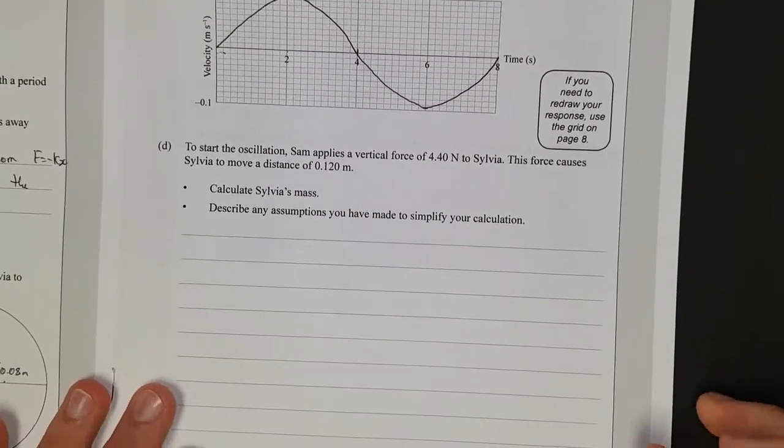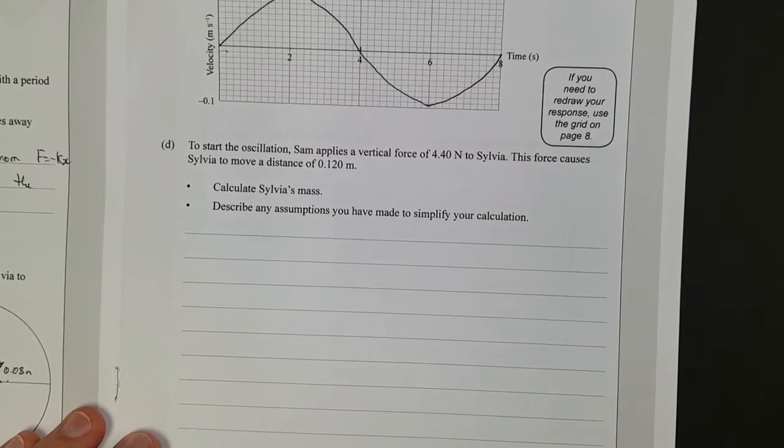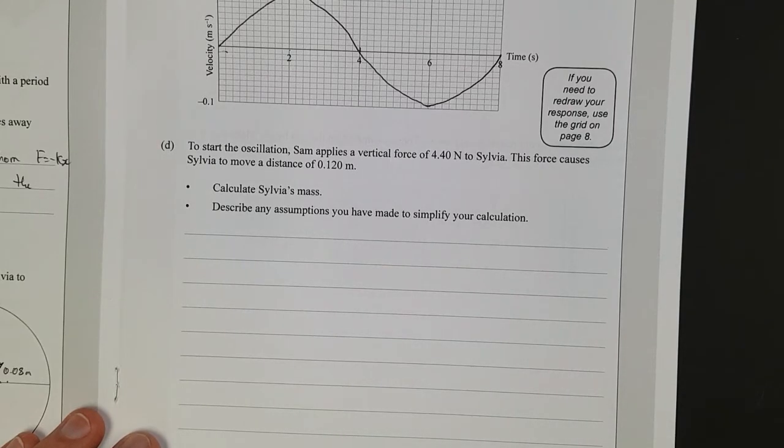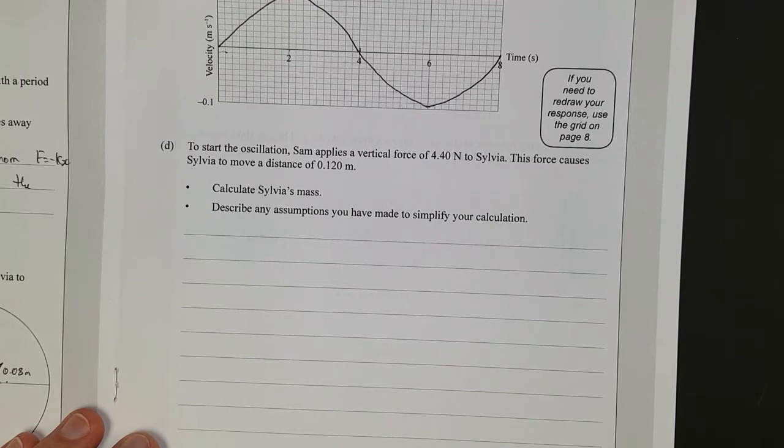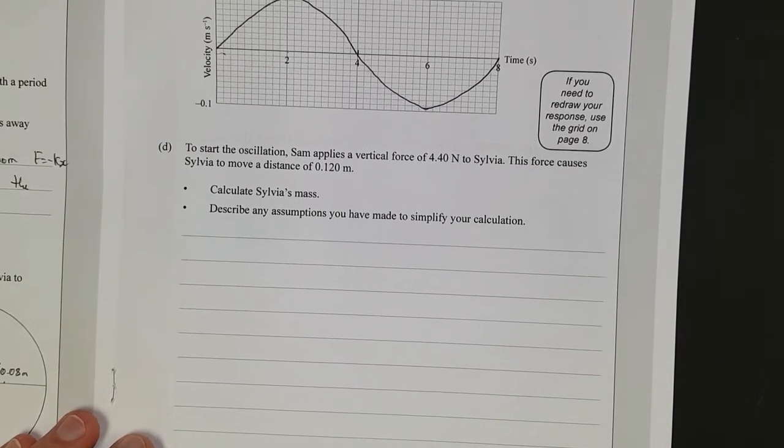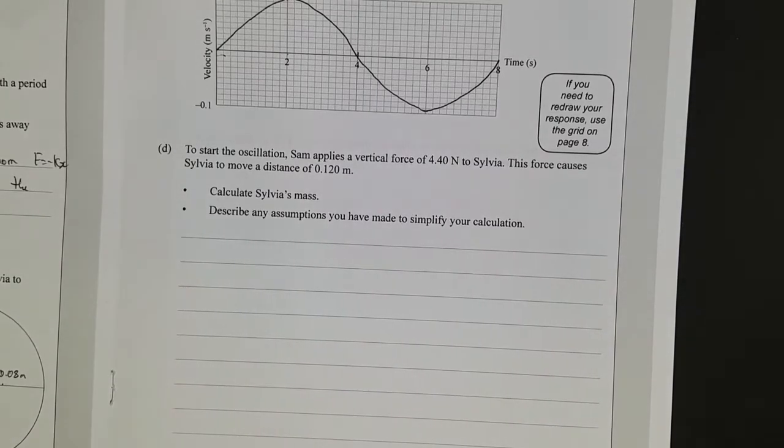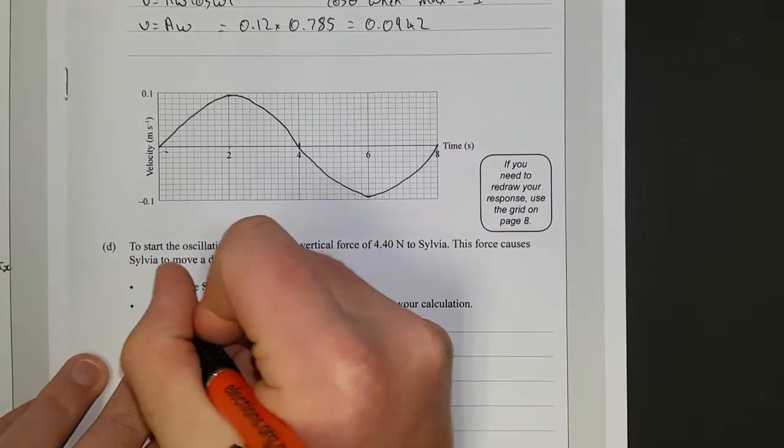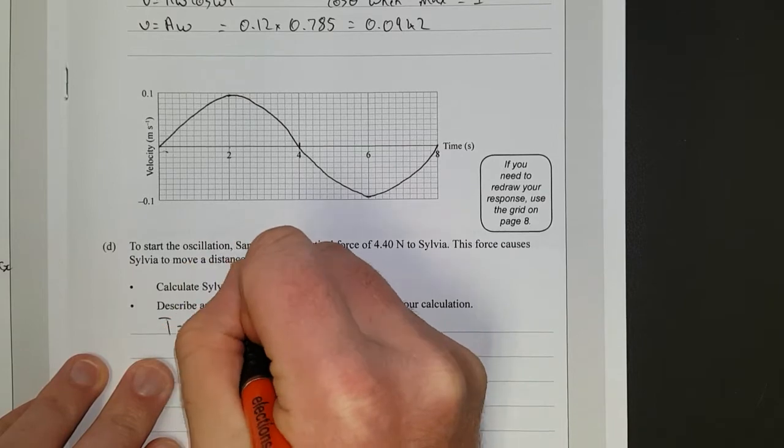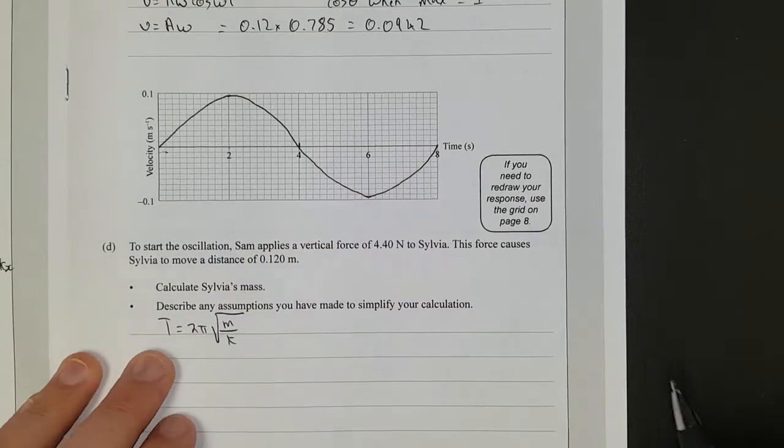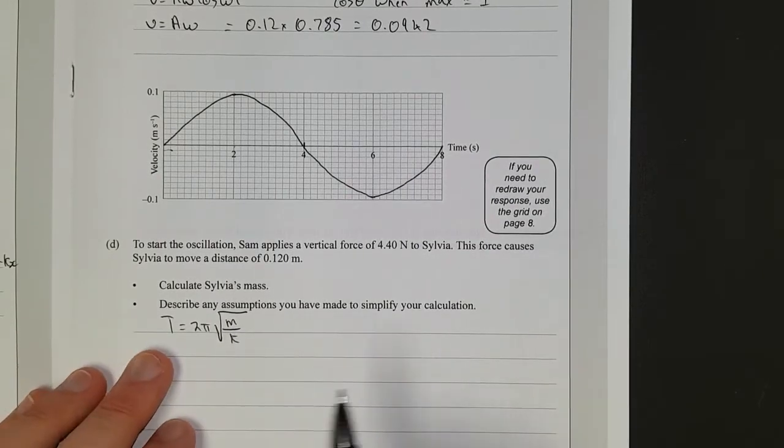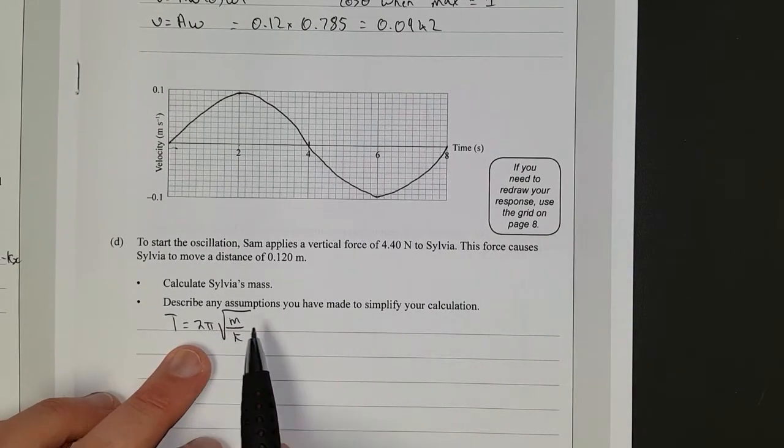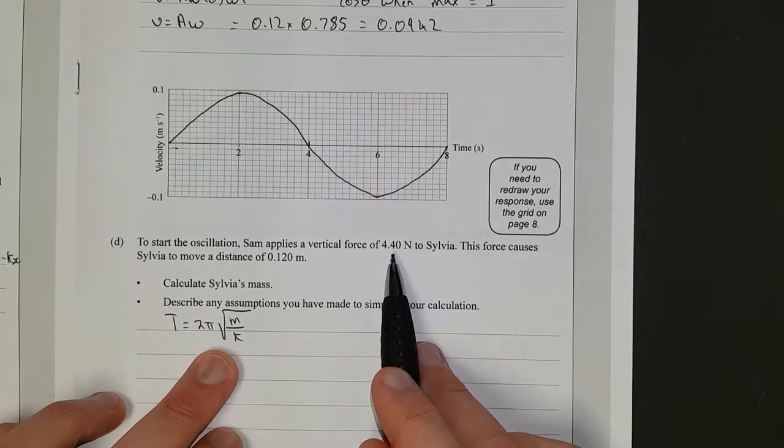Right. So to start the oscillation, next question. Sam applies a vertical force of 4.4 newtons to Sylvia. This force causes Sylvia to move a distance of 0.12 meters. Calculate Sylvia's mass and describe any assumptions you have made to simplify your calculations. So the first way I thought about how to do this was just simply it's a moving spring. So you've got, it's a simple harmonic motion as well, so the period's equal to 2 pi square root mass over, yeah, if you increase the mass, you increase the time it takes to get up and down. So it's mass divided by the spring constant.